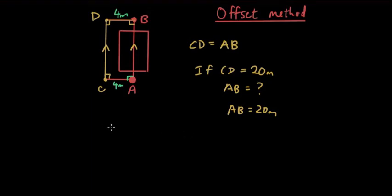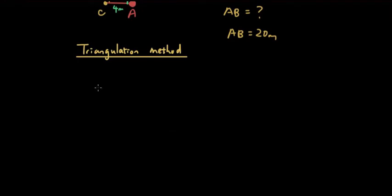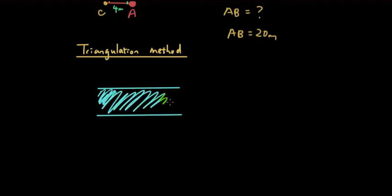Let's do another method called the triangulation method. Let's say there is a river that is quite deep — I can't just walk across it — and I want to find the distance between point A and point B. I want to find the straight-line distance, but because I can't cross the river I have to think of a more creative way.